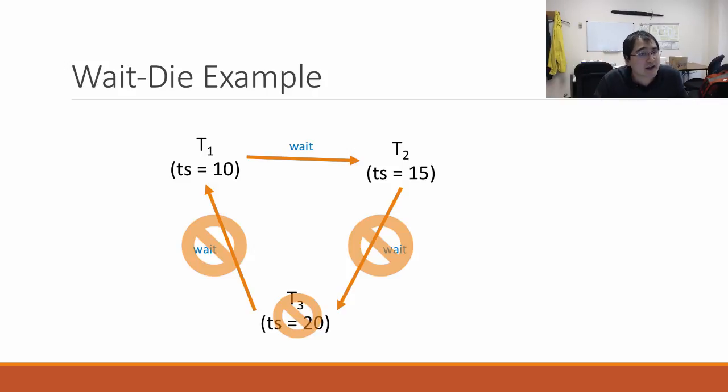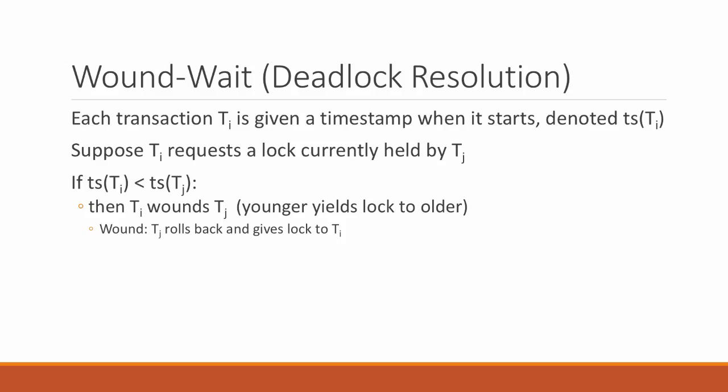The other mechanism is called wound-wait. If transaction i is older than transaction j, instead of waiting, it wounds the younger one — it basically steals the lock from the younger transaction and gives it to the older one. The older one takes all the younger one's locks and says 'roll back, try again later.' So older transactions wound younger ones.